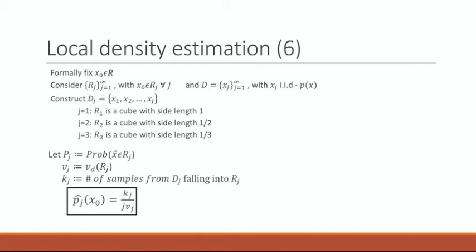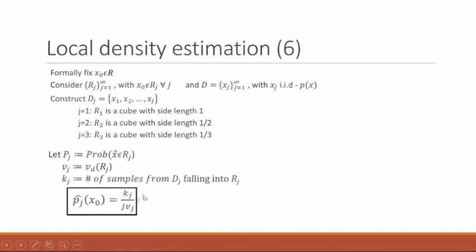If we fix X0 and R and vary the region R from 1 to infinity, we construct the data sets D_j. When J equals 1, R1 will be a cube with a side length of 1. When J equals 2, R2 is a cube with a side length of 1/2, and so on. We get the probability density function, which equals K_j divided by J times V_j — in other words, the number of data points that fall into the region divided by the total number of samples J, times the volume of the small region around the data point.